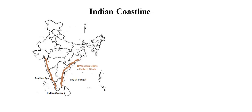We will cover the meaning of coast, states and union territories under the Indian coastal plain, its divisions on the basis of direction, and the subdivisions of the Western Coastal Plain. Welcome to Geography in Short, with the special topic: Indian Coastline.